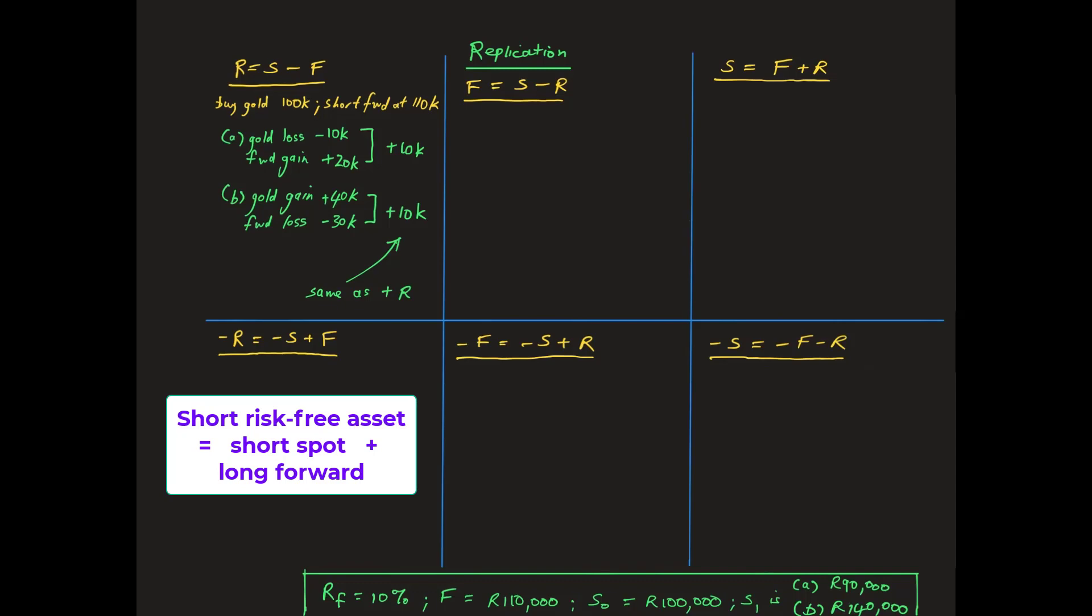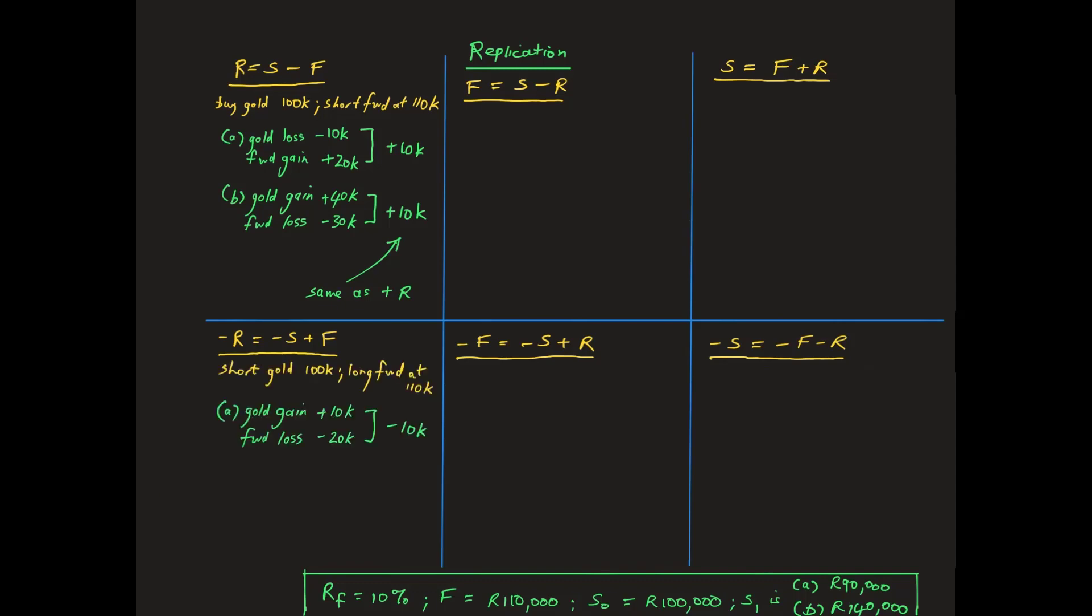In case A, the short sale of gold generates a profit of R10,000. This occurs because the gold is borrowed at T0 and sold on that date for R100,000, and then bought back at the end of the year for only R90,000 in order to return it to the gold lender.